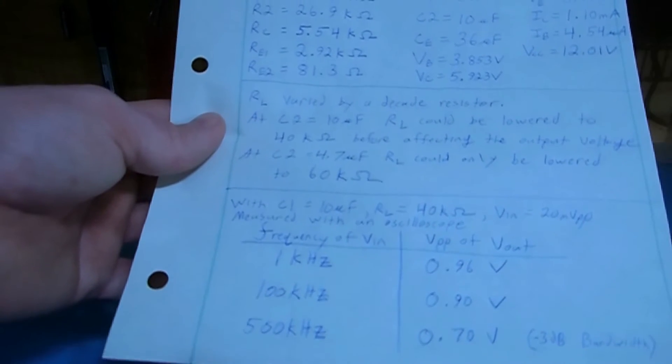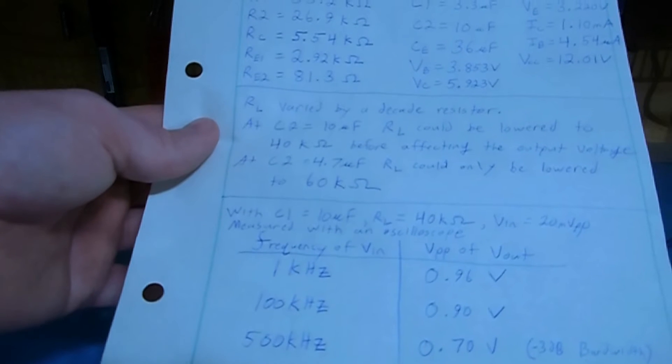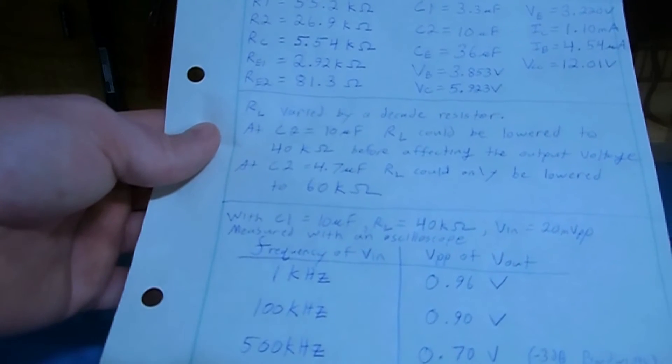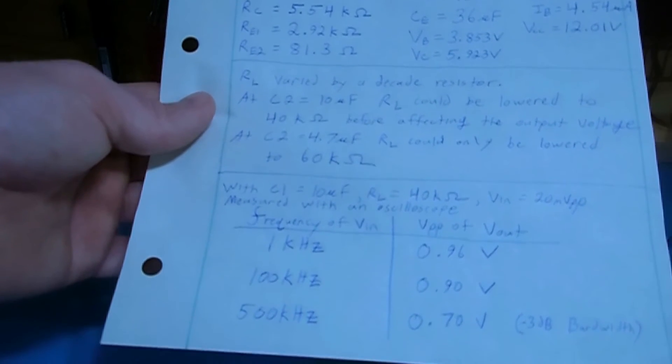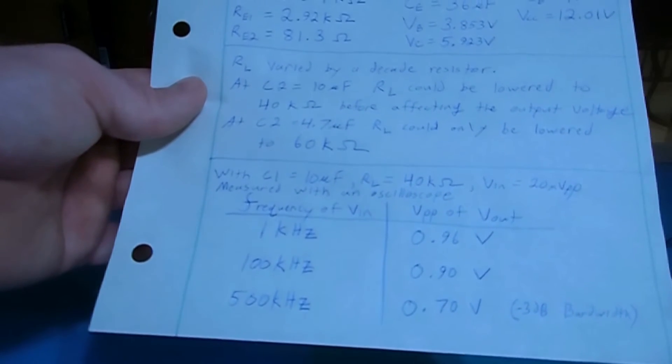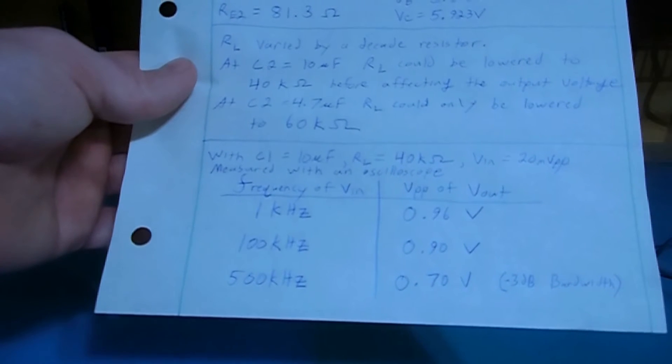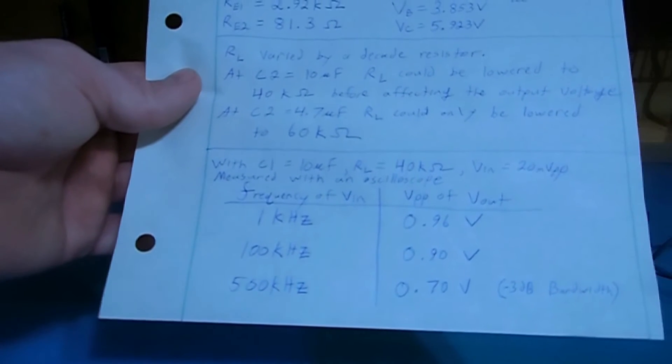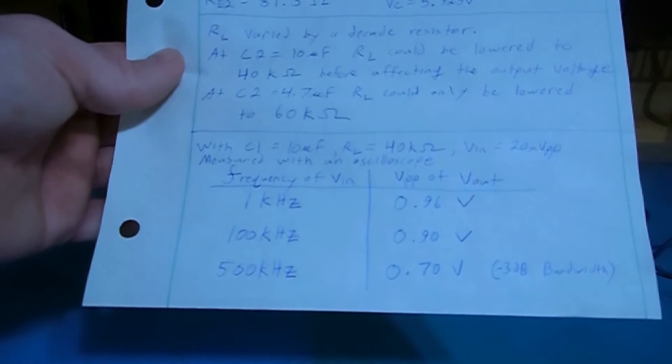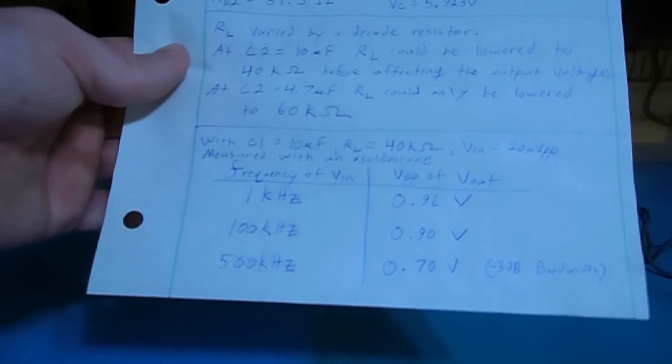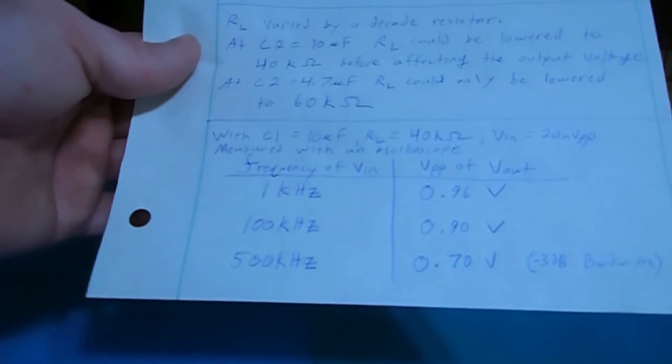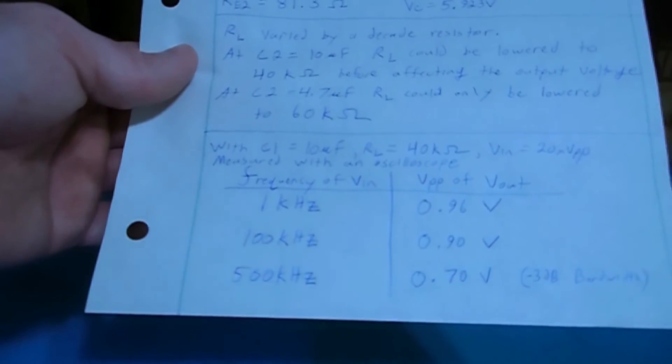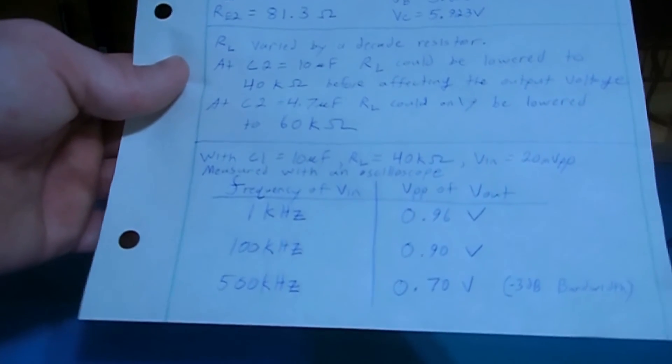And then I switched back to the 10 microfarad capacitor and 40,000 ohm load with a 20 millivolt peak-to-peak input, and swept the frequency of the input and measured the output signal amplitude, and found that at 1 kilohertz, we have a 960 millivolt output signal, which is only 4% off from our theoretical value of 1 volt. Then at 100 kilohertz, we get 0.9 volts as our output voltage, and at 500 kilohertz, we find 0.7 volts as our amplitude, which is effectively the bandwidth of our amplifier, which is negative 3 dB down from our starting amplitude of 1 volt peak-to-peak.